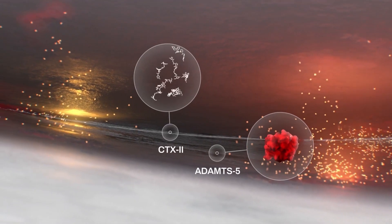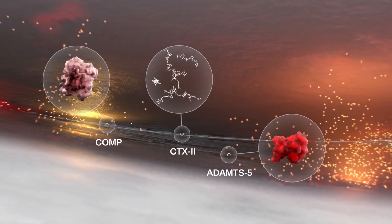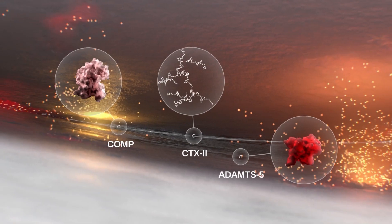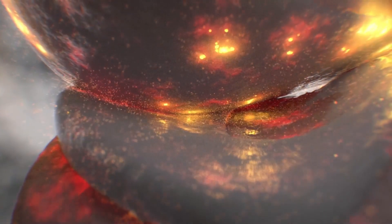As cartilage deteriorates, degradation products such as COMP and CTX2 are produced. Joint dysfunction due to cartilage damage causes more pain and inflammation, which progresses to further joint destruction.